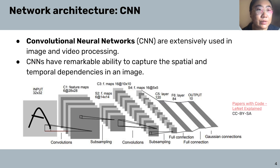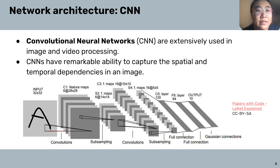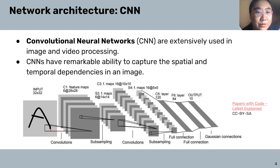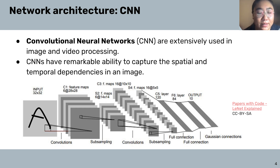To do this task, we will look at a classic neural network called convolutional neural networks. Ever since it was invented in the late 90s, it has been extensively used in image and video processing. It has a remarkable ability to capture the spatial and temporal dependencies in an image, which is the major reason for its popularity. In a standard neural network, each unit in each layer is a weighted sum of the previous activations, passed through an activation function.